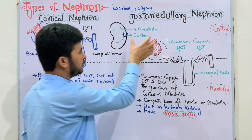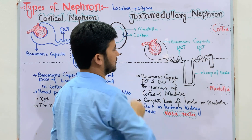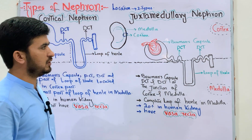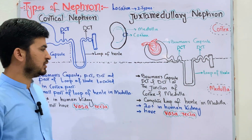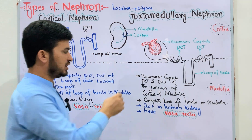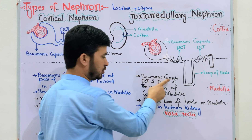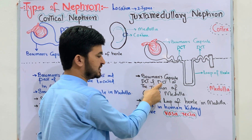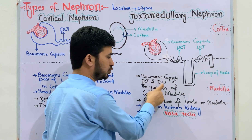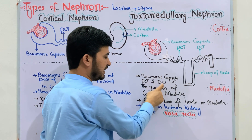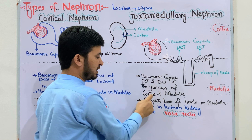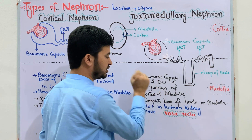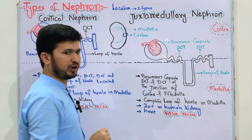The second type is the juxtamedullary nephron. In the juxtamedullary nephron, the proximal convoluted tubule and distal convoluted tubule are located at the cortex and medulla junction.